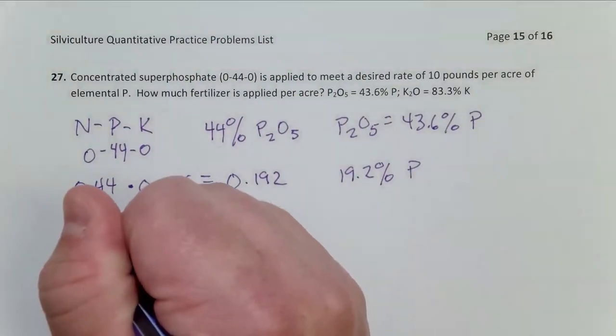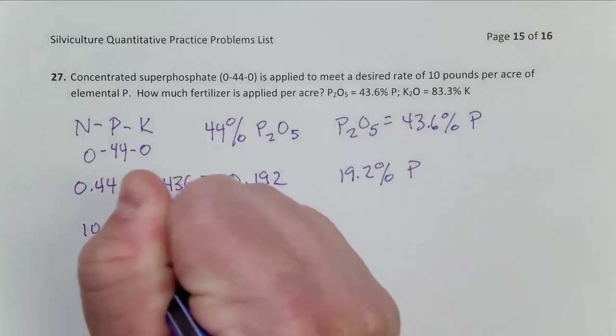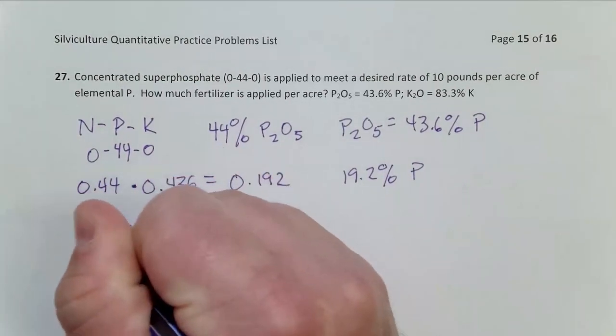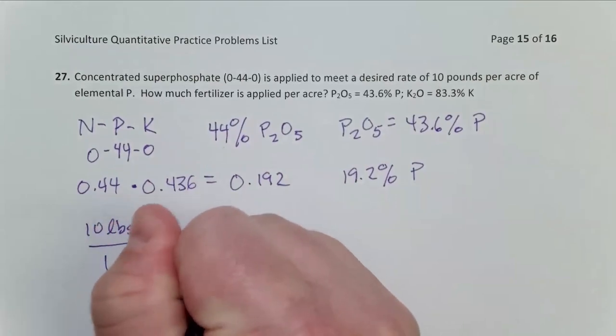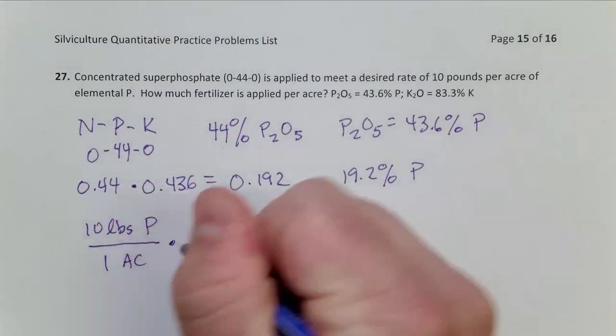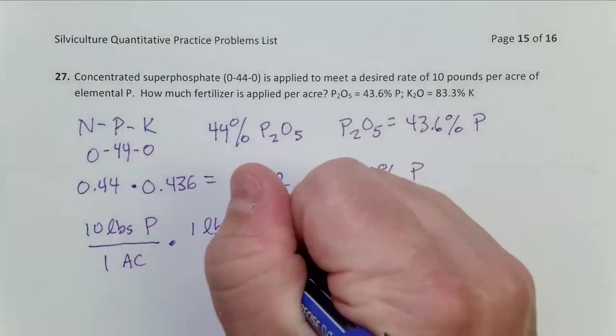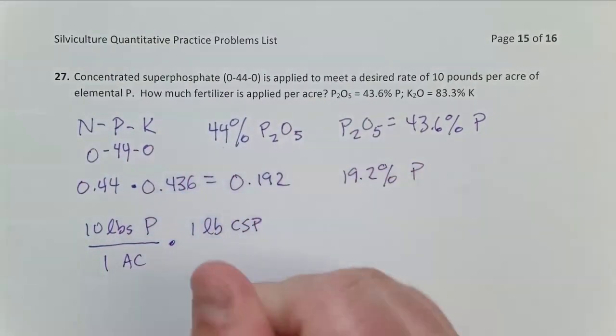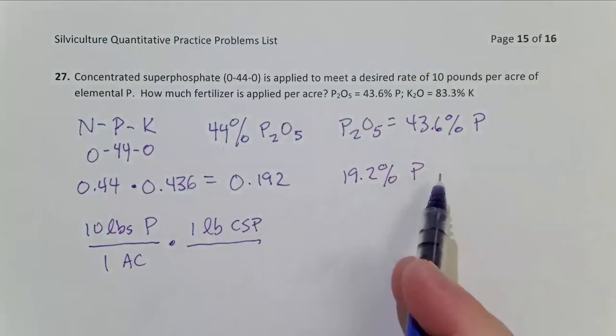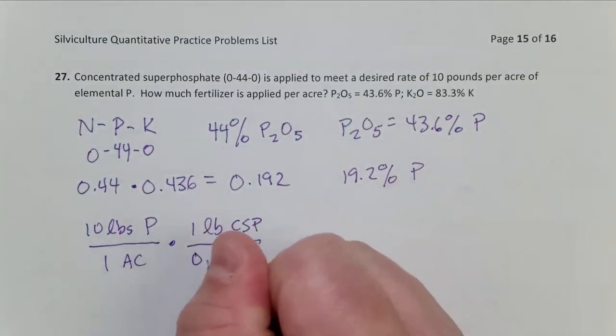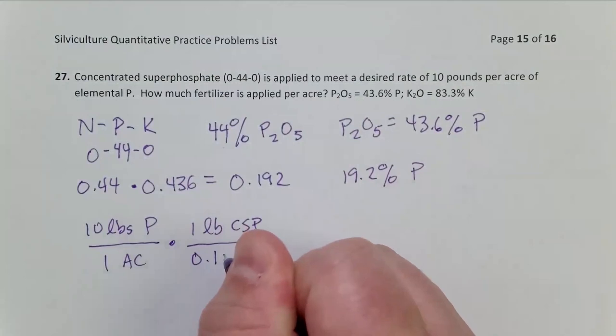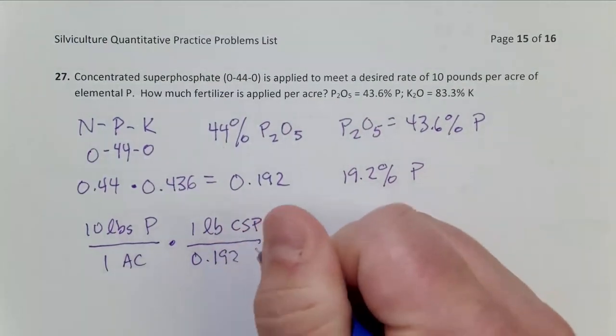So here's how you can write that out. We want 10 pounds of concentrated superphosphate. I'll write CSP to abbreviate that. It has 19.2 percent phosphorus, so one pound CSP will be 0.192 pounds P.